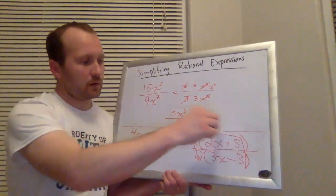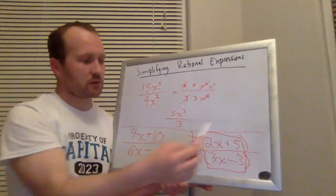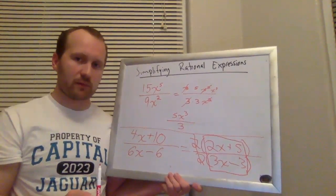The 2s cancel. And the answer here, the simplified version of this, is 2x plus 5 over 3x minus 3.